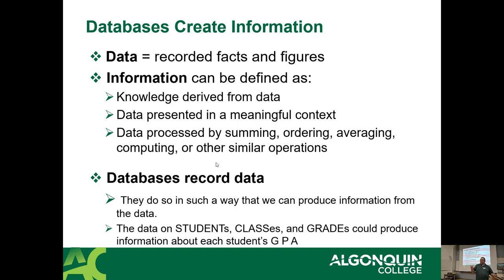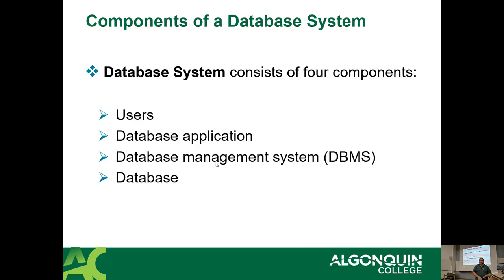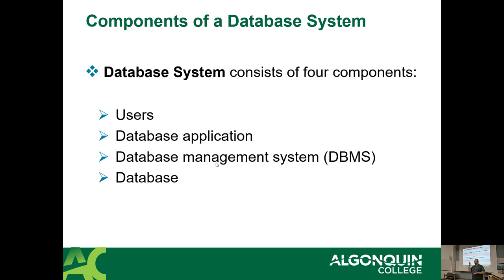When databases operate on their data, they can produce information about each student — what courses you have, what your GPAs are, things like that. A database system has four components, so we're done talking about data — that was way too much talking about data for when you don't even know what data looks like yet. So we're going to talk about the database system.